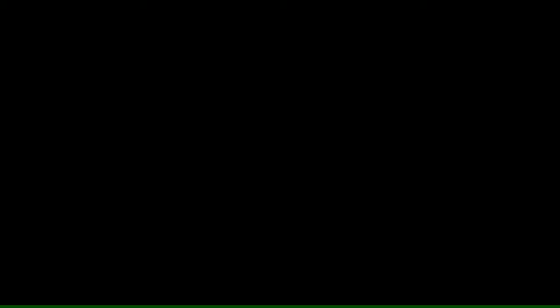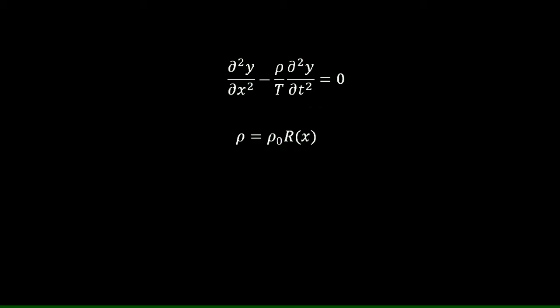Next, the wave equation can be written like this. As ρ is a function of x, we define it in the following way. Next, we define a reference speed c as the following. The wave equation becomes something like this.